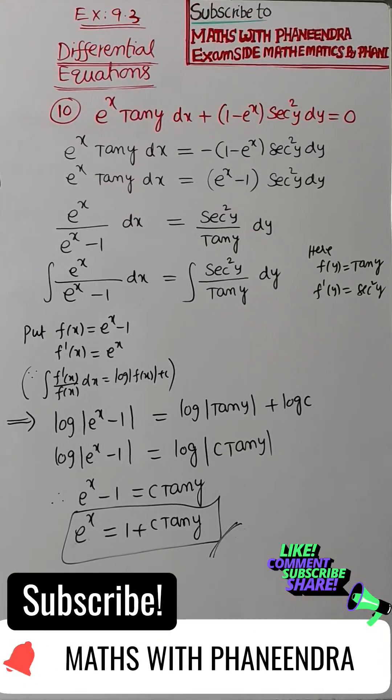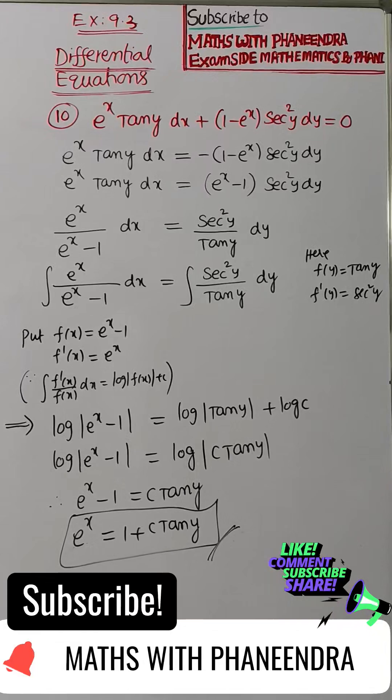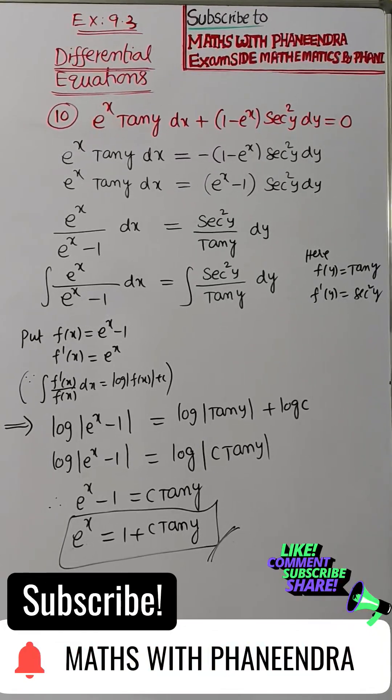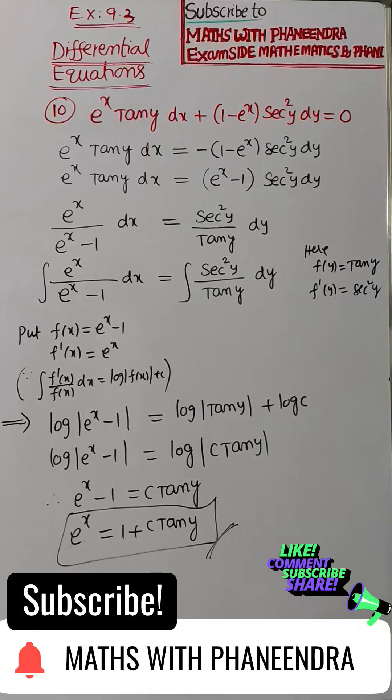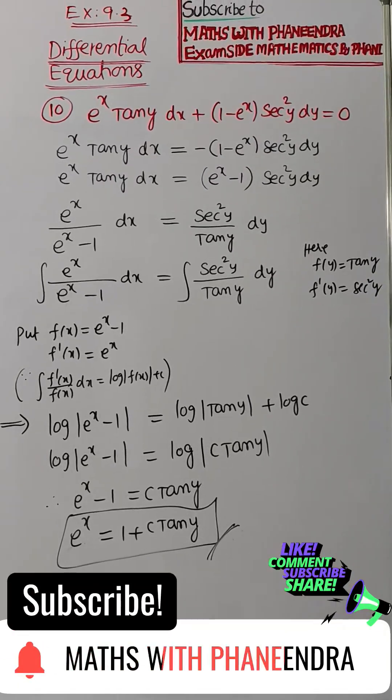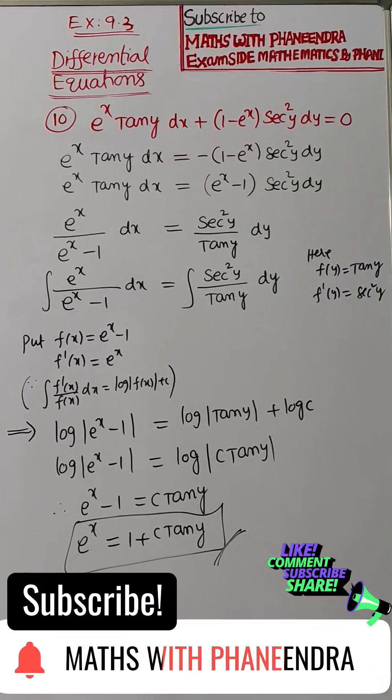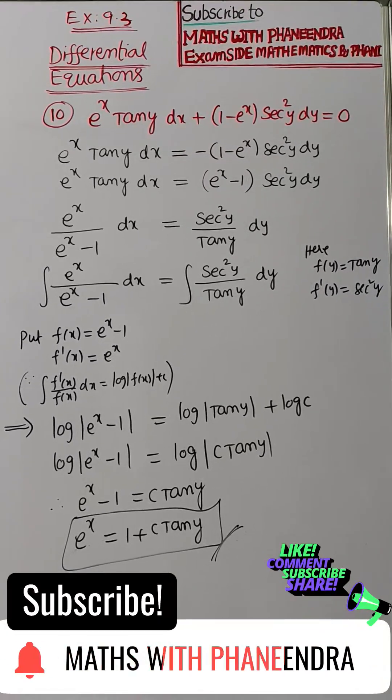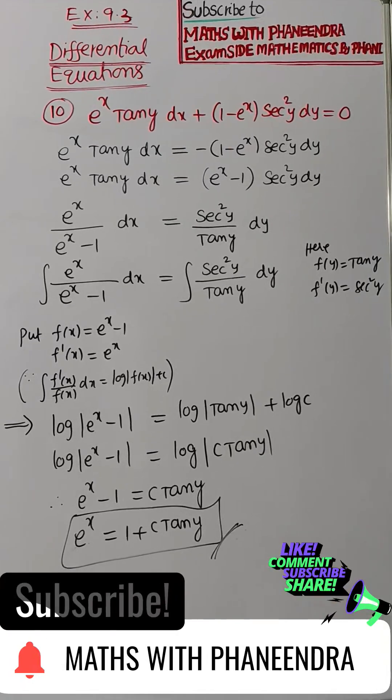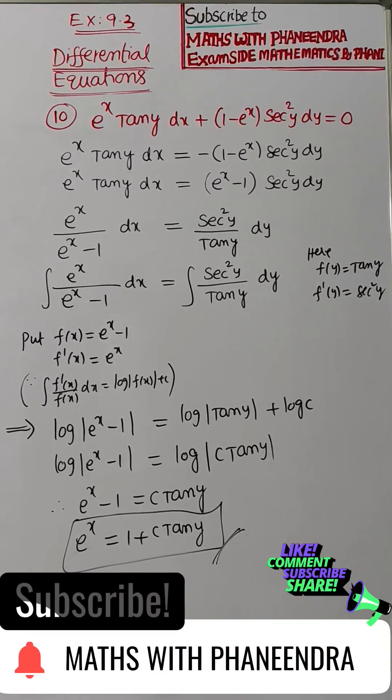Then derivative of e power x minus 1 is e power x. So here we are going to apply the formula integral f dash of x by f of x dx equal to log mod f of x. So by applying this formula, LHS value log mod e power x minus 1 which is equal to RHS value log mod tan y plus c.